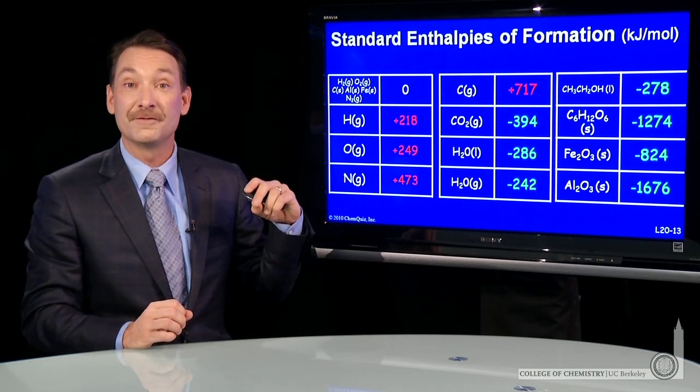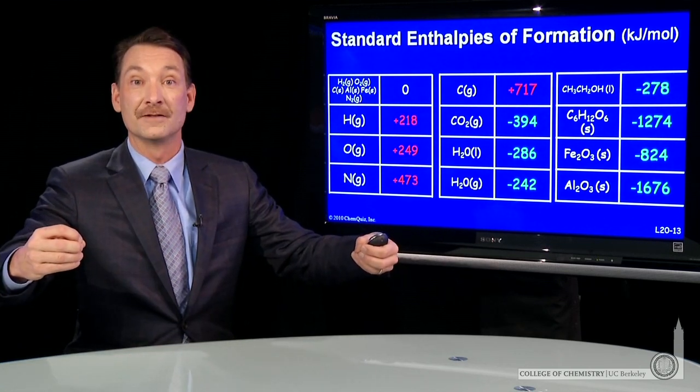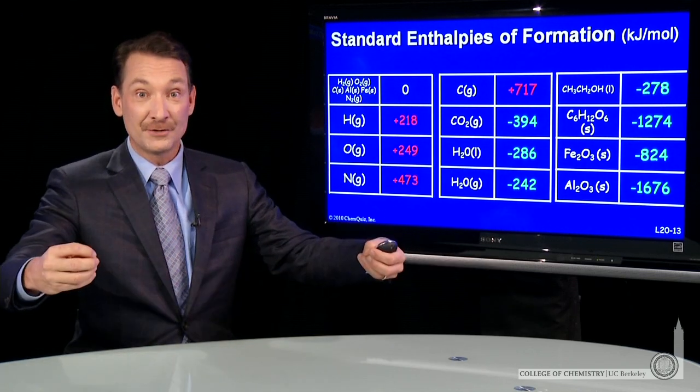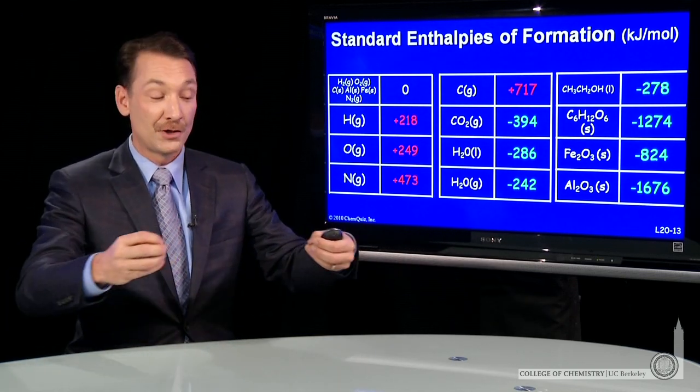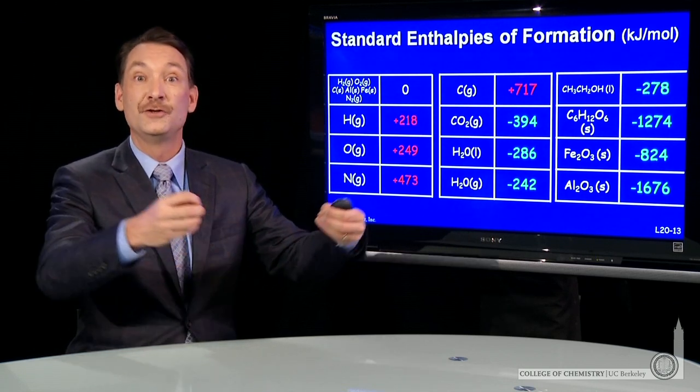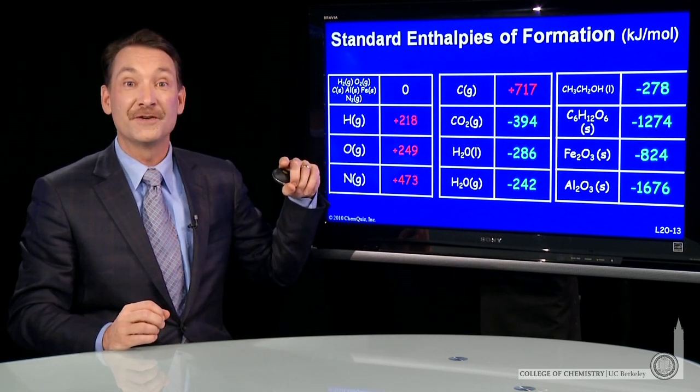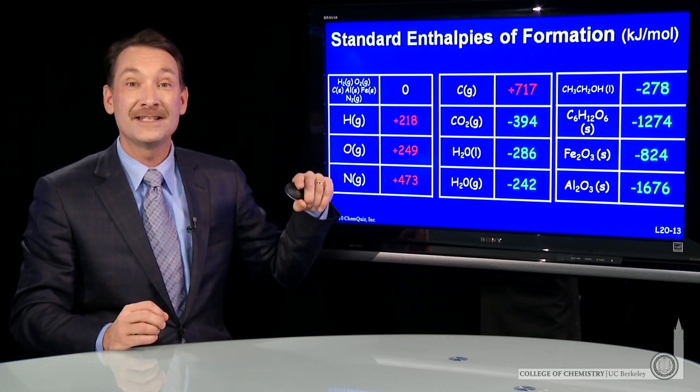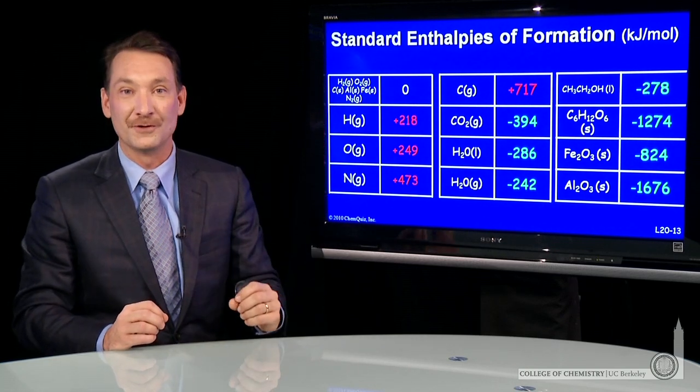To make atoms out of diatomic hydrogen gas, you have to break hydrogen-hydrogen bonds. Breaking bonds always requires energy, so there's an increase in energy. That's an endothermic reaction to go from the molecules to the atoms. So this one atmosphere of hydrogen atoms in their standard state is 218 kilojoules higher than a half a mole of hydrogen molecules.